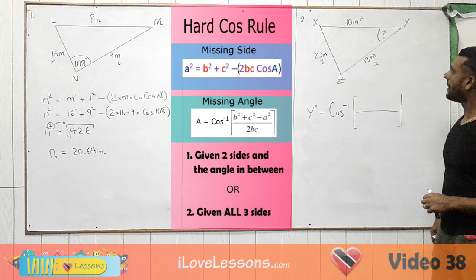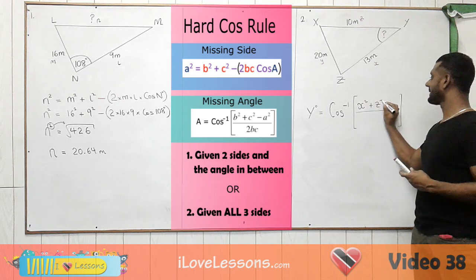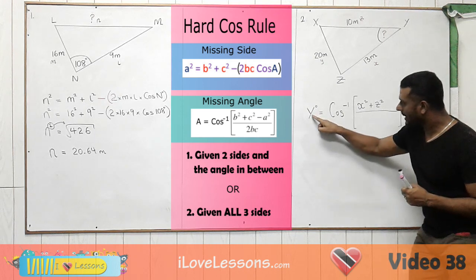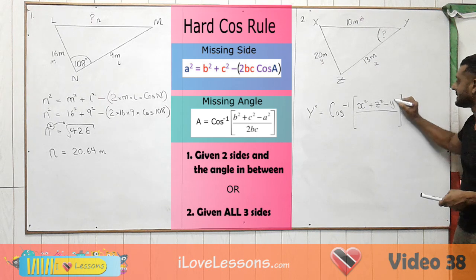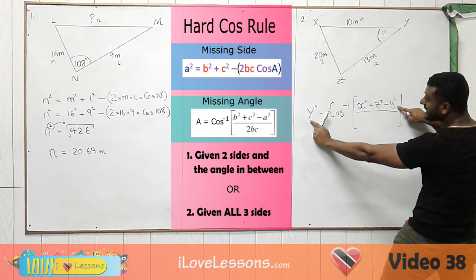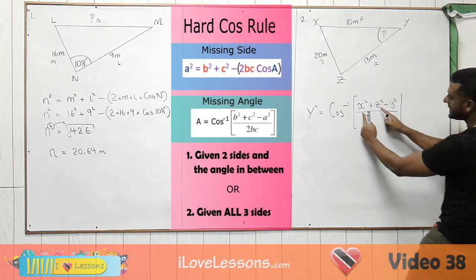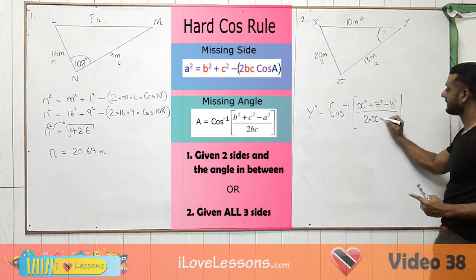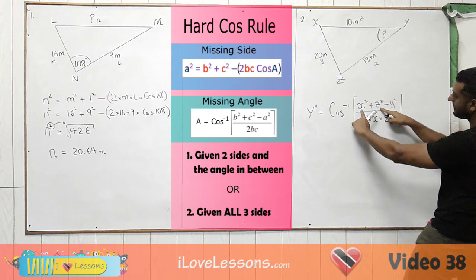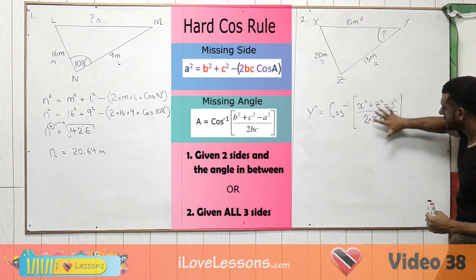Underneath there will always be a 2, and the first two letters from the top — x and z — slide down underneath with a multiply sign between them, not an addition sign. Notice there are squares on top but no squares underneath. So the formula is: Y = cos inverse of (x squared plus z squared minus y squared) divided by (2 times x times z). Now we just work this out, and the cos inverse gives us our angle.